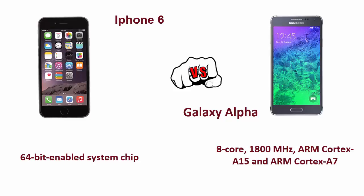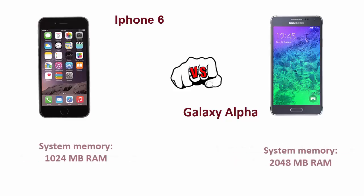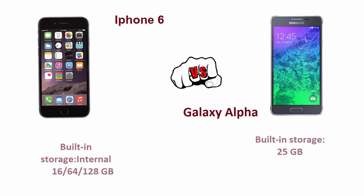When it comes to system memory, the iPhone 6 has 1 gigabyte of RAM and the Galaxy Alpha has 2 gigabytes of RAM. The iPhone 6 is available in 16, 64, and 128 gigabyte variants whereas the Galaxy Alpha is available in a 32 gigabyte variant.